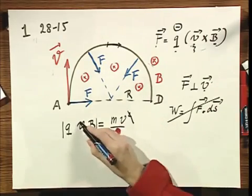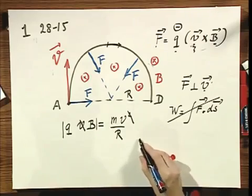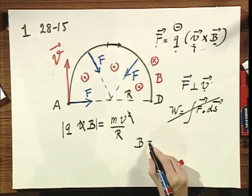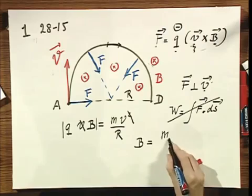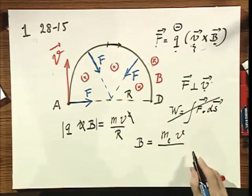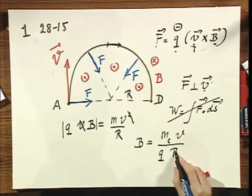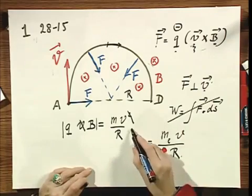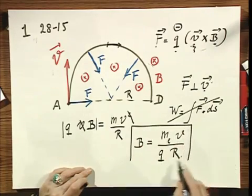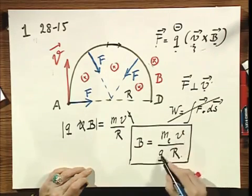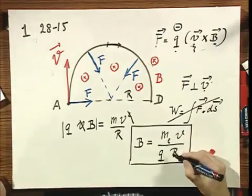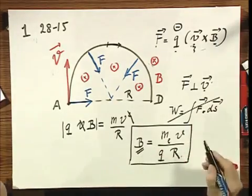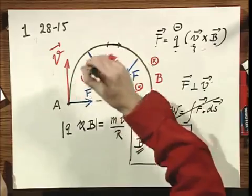So I lose one V, and I find that B equals the mass of the electron times that velocity divided by the charge of the electron times the radius. Since I know the mass of the electron, I know the velocity, I know the charge, and I believe I know the radius, you can calculate the magnetic field.